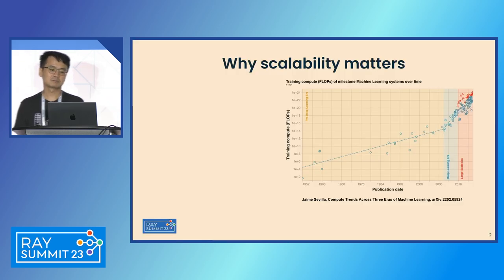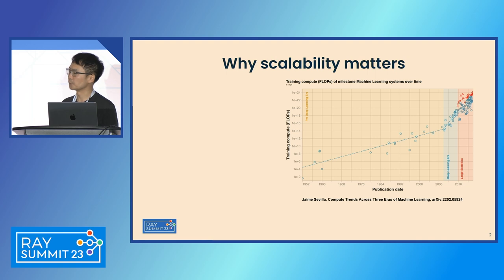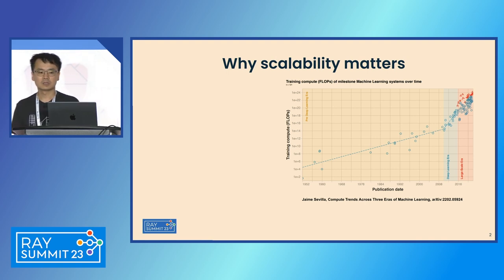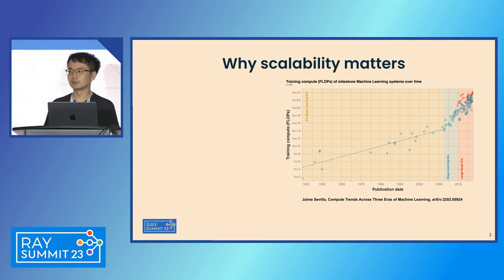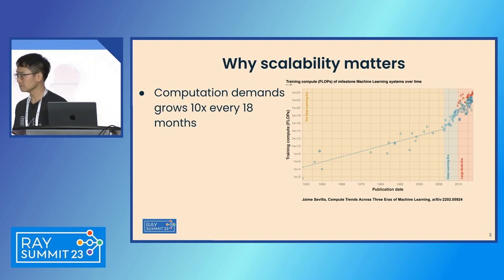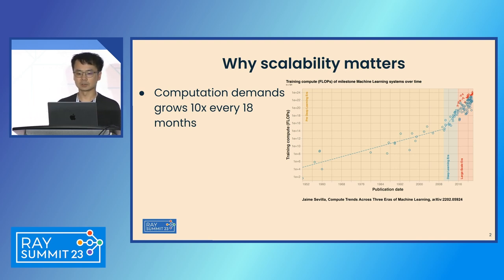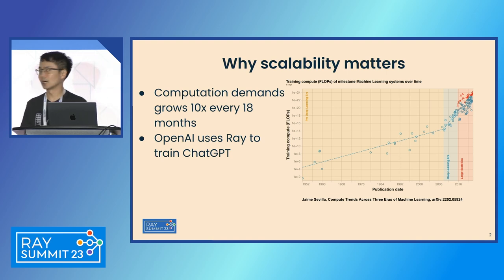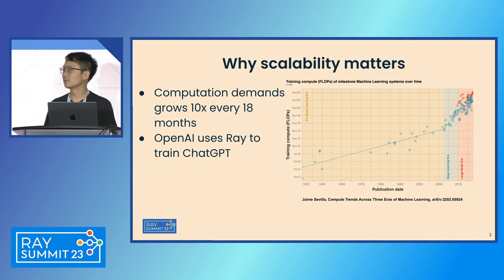But first things first, why is scalability important? Nowadays, the model is becoming bigger and bigger every year. The computation demand grows 10 times every 18 months. This requires scaling up to handle large workloads. For example, OpenAI right now uses Ray to train ChatGPT, which is one of the largest language models in the world.